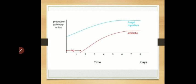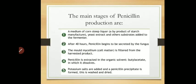Here is a graphical representation of antibiotic production. Basically, when the bacteria — or in this case the fungus — is in its log or exponential phase, rapid production of antibiotic is seen, and then it gradually becomes steady in the stationary phase. The main stages of penicillin production include five steps.